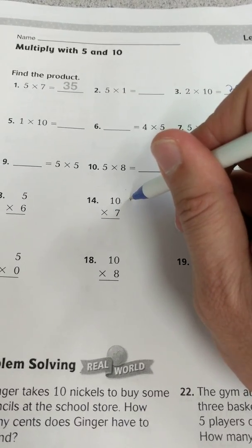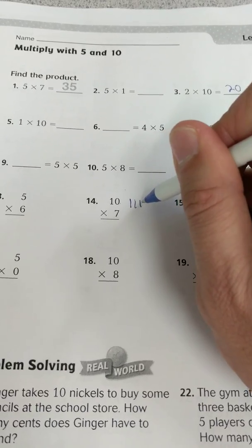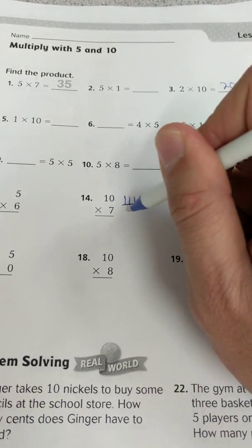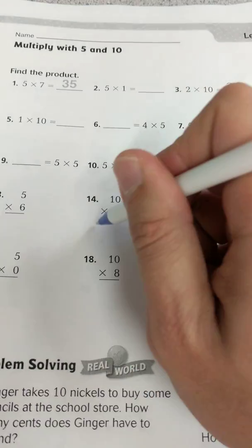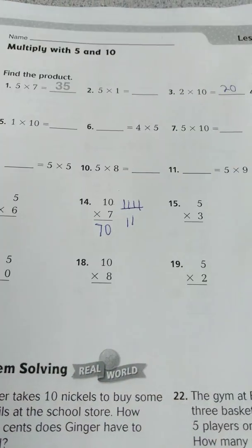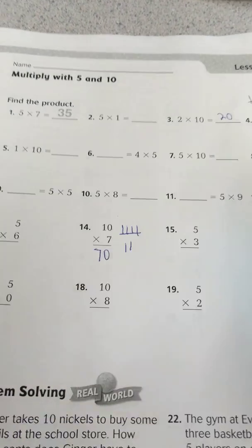If I count by 10s, 10, 20, 30, 40, 50, 60, 70. So boom. And that is how we multiply by 5 and 10.